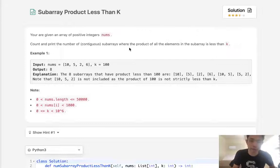I don't think we actually need to print the subarrays, but we need to count them and return the number.